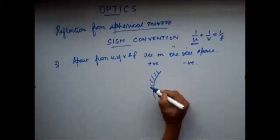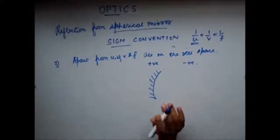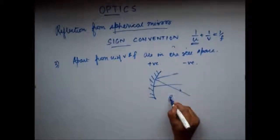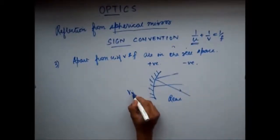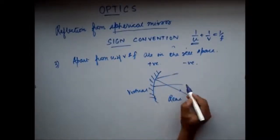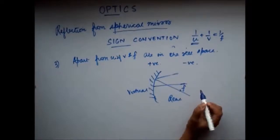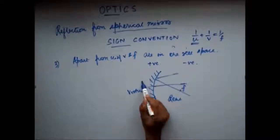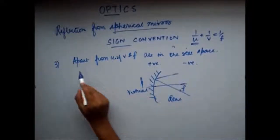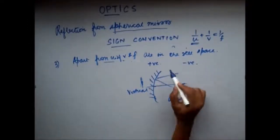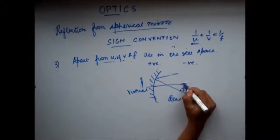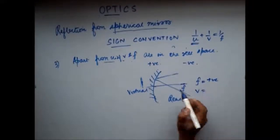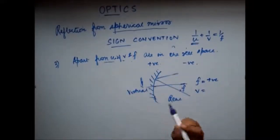Let's take the example of the concave mirror. A ray strikes and gets reflected here, so this is my real space and the other side is my virtual space. For the concave mirror, the focal length f lies in the real space — so f is positive. But the image v is formed on the virtual space side — so v is negative.